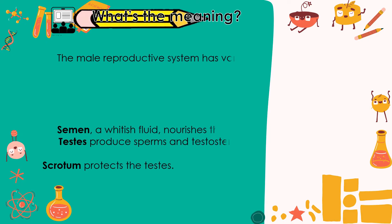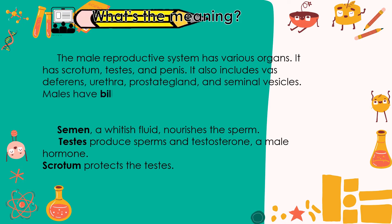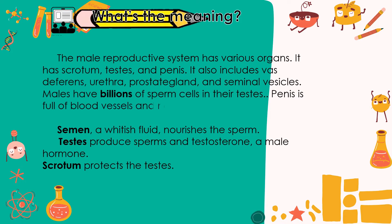The male reproductive system has various organs. It has prostate, testes, and penis. It also includes vas deferens, urethra, prostate gland, and seminal vesicles. Males have billions of sperm cells in their testes. The penis is full of blood vessels and nerves. Semen is a whitish fluid that nourishes the sperm. Testes produce sperm and testosterone, a male hormone. The scrotum protects the testes.